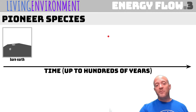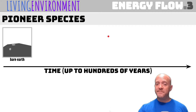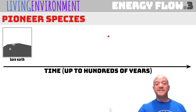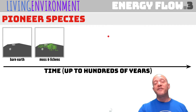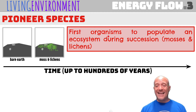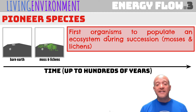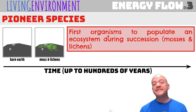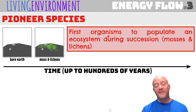The word pioneer — as in a pioneer species — in history class you've learned that pioneers are the first settlers in the West. Pioneer species are the first organisms to populate an ecosystem during succession, and they include mosses and lichens. Mosses are that fuzzy stuff that grows on trees. Lichens are the scaly things that grow on trees and rocks.